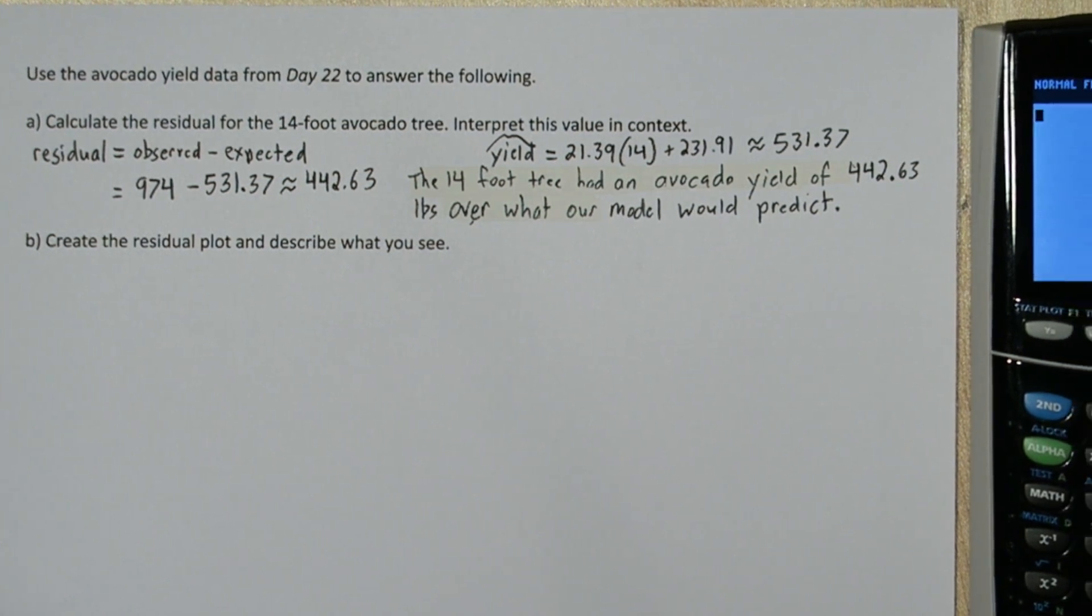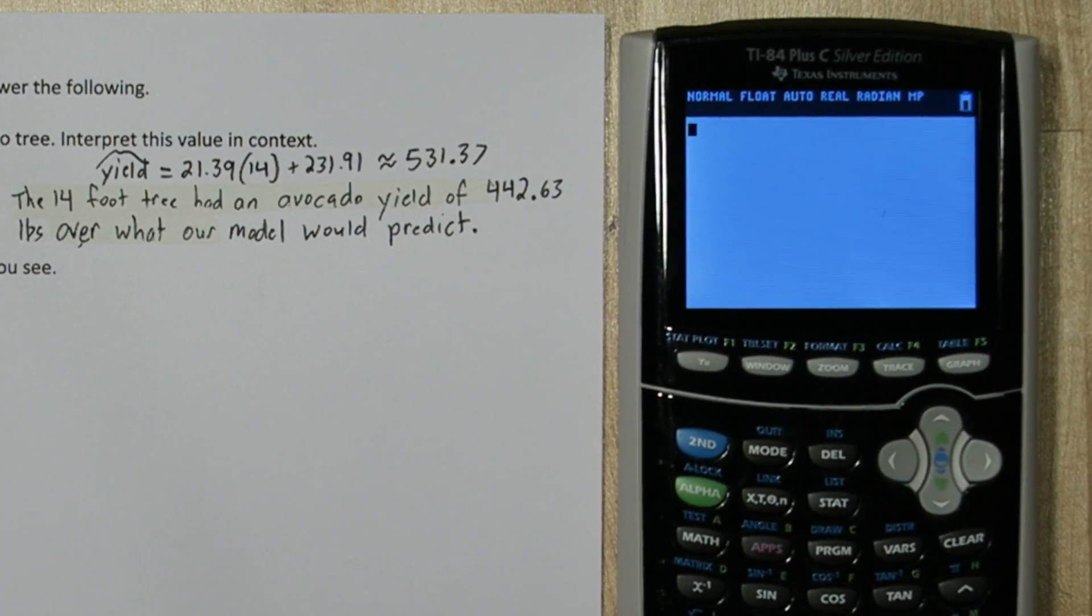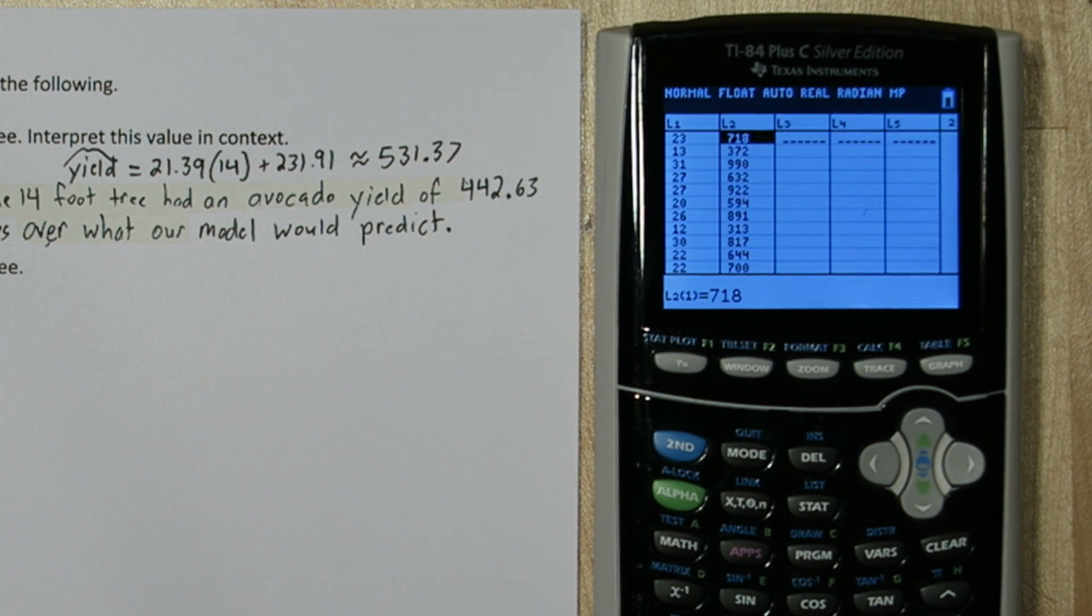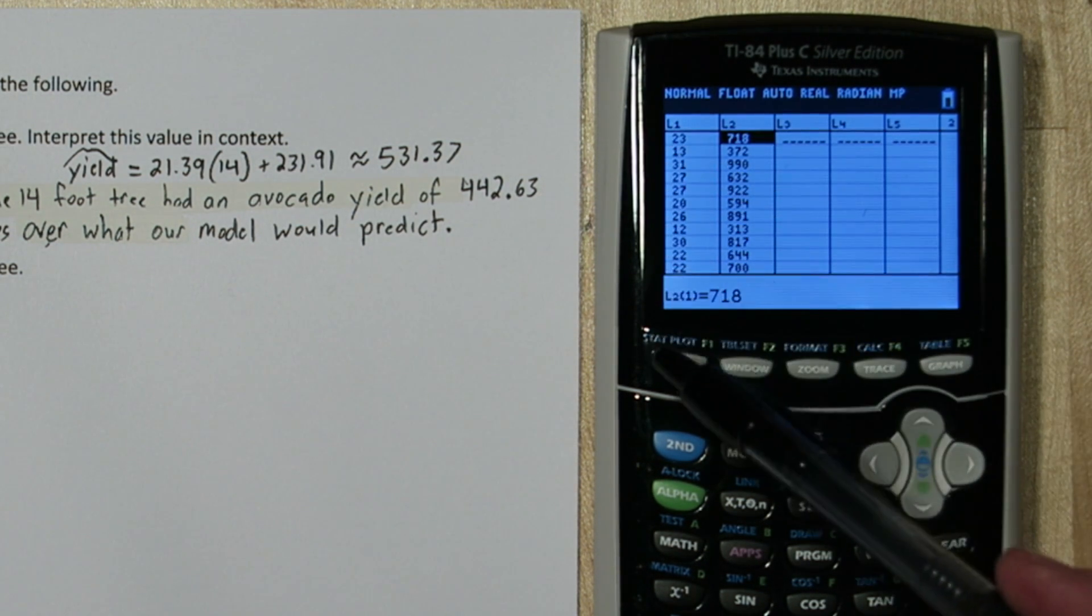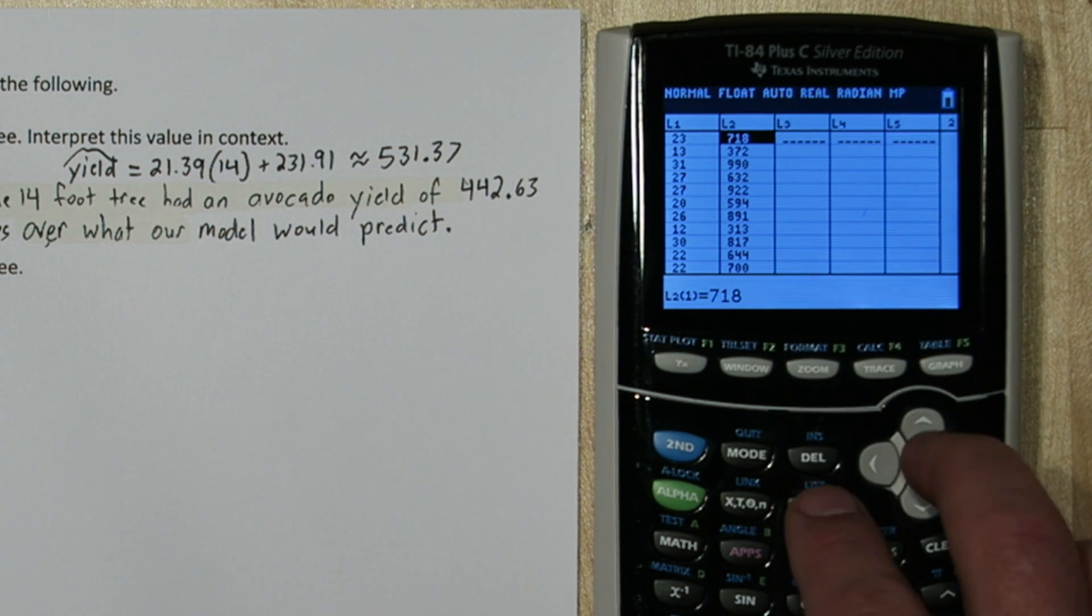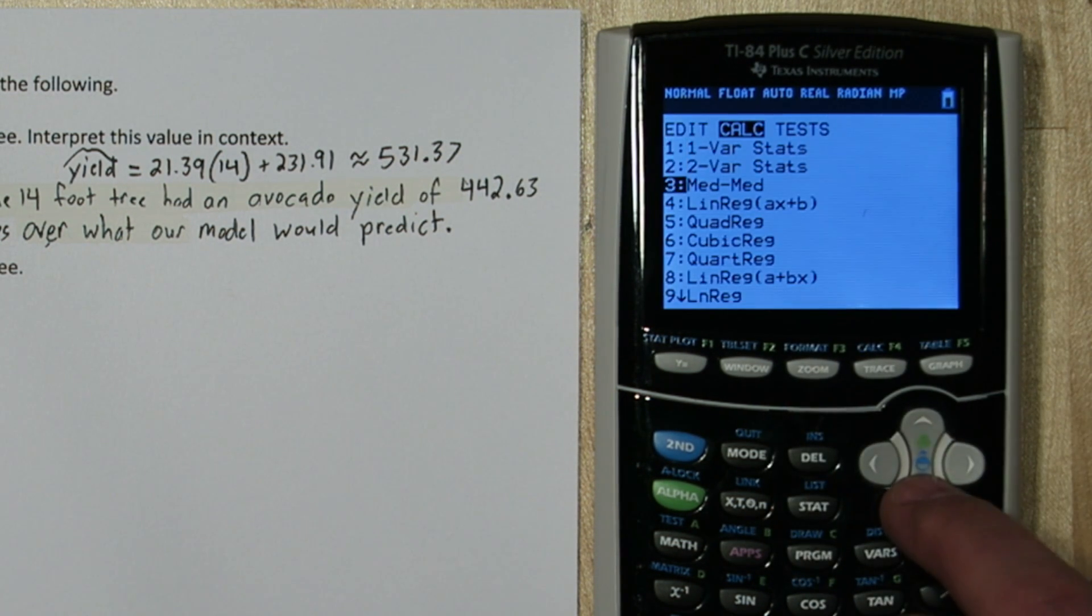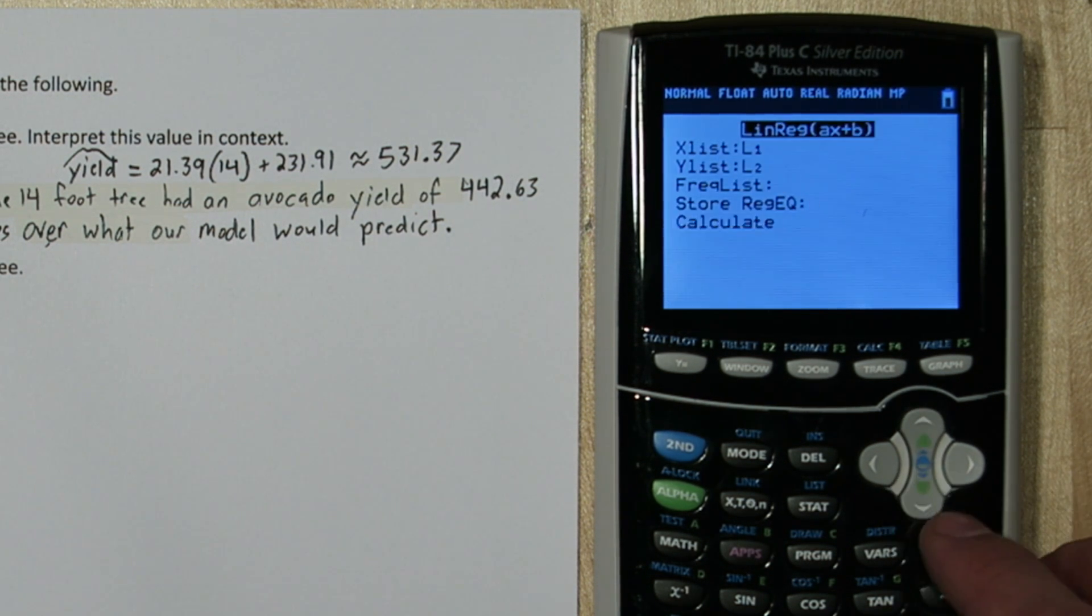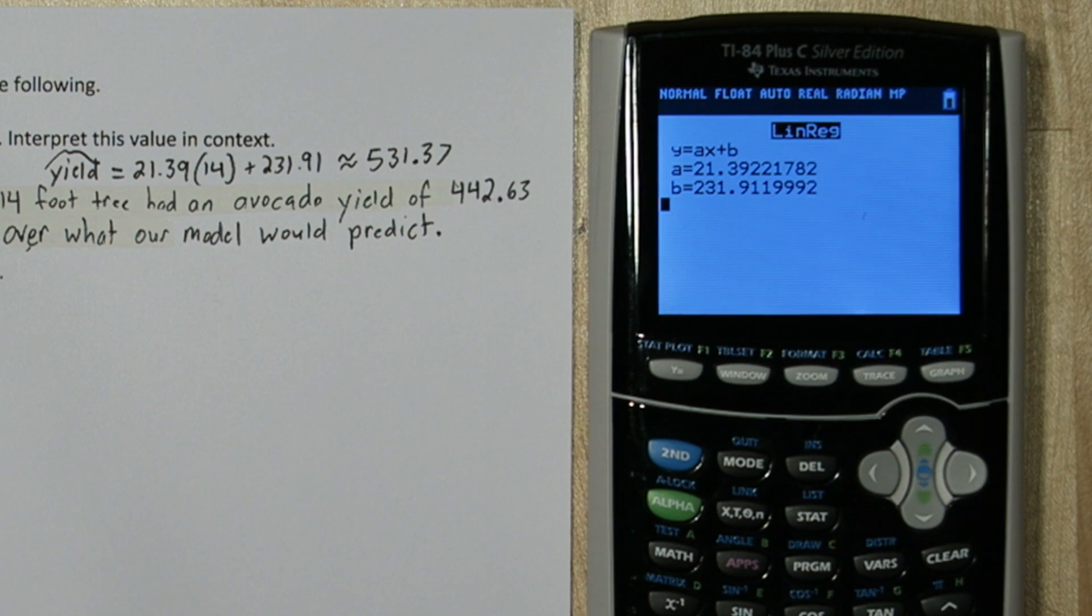We're going to use our calculator to help us make the residual plot. If we press stat and then edit, we already input all of the avocado tree heights in list 1 and all the yields in list 2. Then if you press stat and calculate and go down to linear regression, we can calculate our model. So there's our slope and y-intercept.